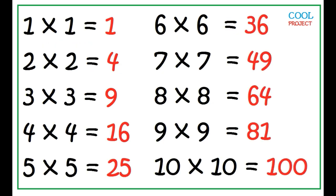Here are some of the commonly used perfect squares: 1, 4, 9, 16, 25, 36, 49, 64, 81, 100.